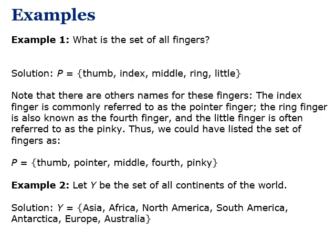Another example: Write the set of all continents of the world. We list all the elements: {Asia, Africa, North America, South America, Antarctica, Europe, Australia}.